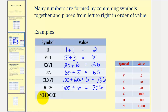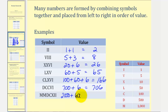Here we have two capital M's. That would be one thousand plus one thousand, or two thousand, plus D followed by C — that's going to be five hundred plus one hundred, that's six hundred, plus X, which is ten, plus two capital I's, that's two. This would be two thousand six hundred twelve.